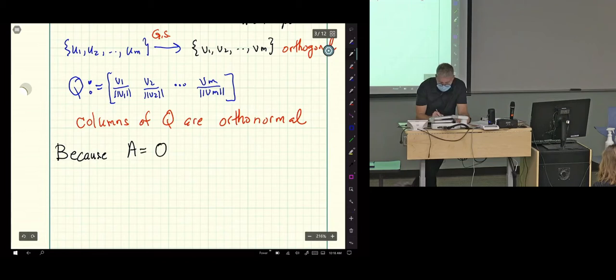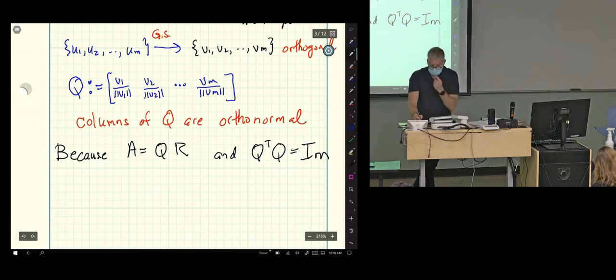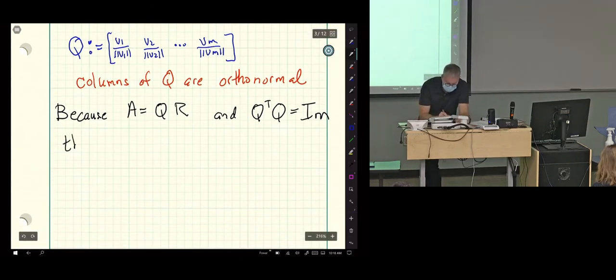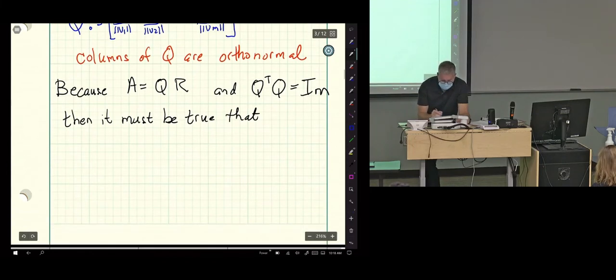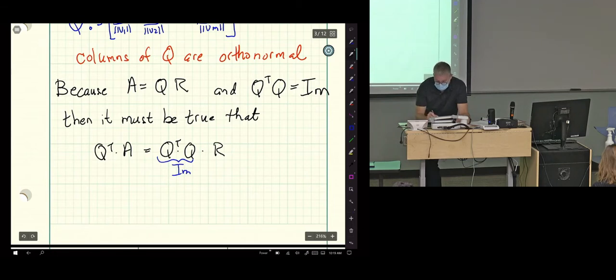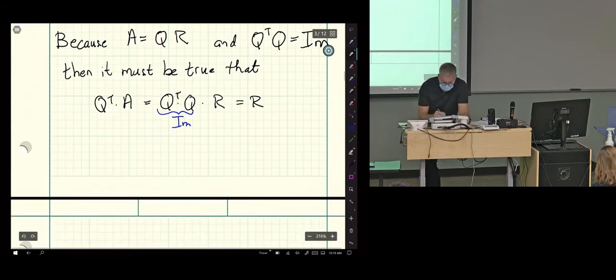Now, if we're going to have A equals Q times R, and Q transpose Q, so that's the question that's in chat. Is this really true? It's really the M by M identity matrix, and it will be. So that it must be true that if I go Q transpose times A, that's Q transpose Q times R, this is the M by M identity matrix I claim, and so then this gives me R, so I can compute R like this.